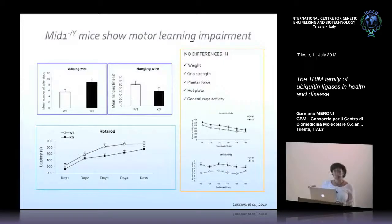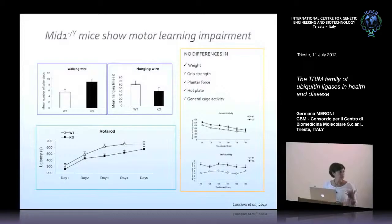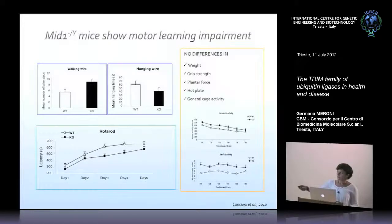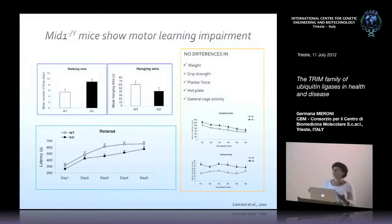These mice also show behavioral impairment. Being defective in the cerebellum, we tested motor coordination tasks. They make more false steps in the walking wire test, remain hanging on the wire for less time than wild-type animals, and perform worse on the rotarod analysis, where mice must walk on a rotating bar without falling. While both knockout and wild-type mice learn the accelerating rotarod task over consecutive days, the knockout mice show much worse performance in this motor learning task.